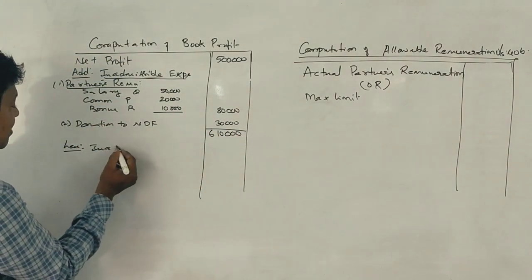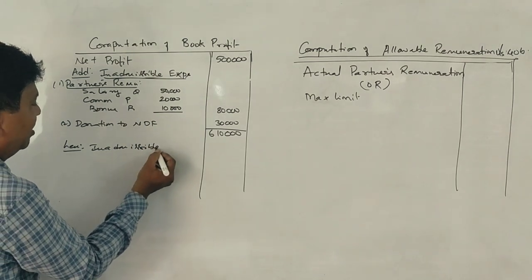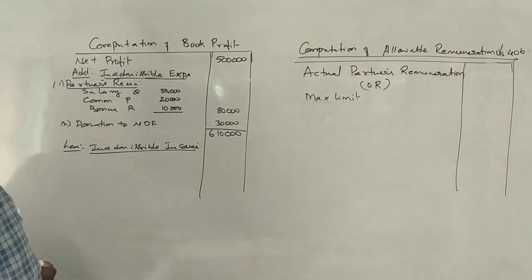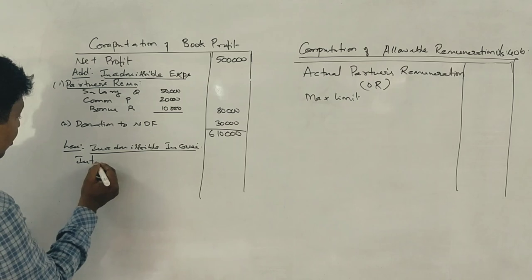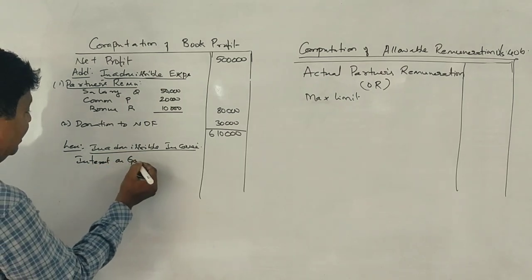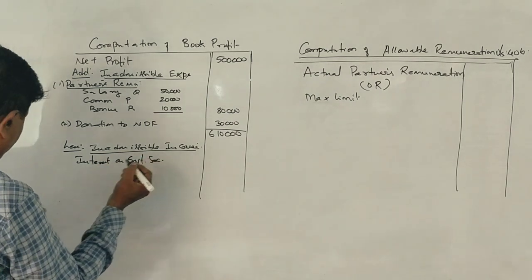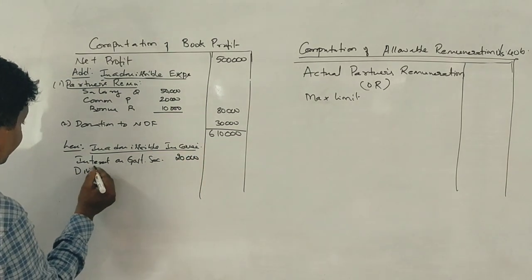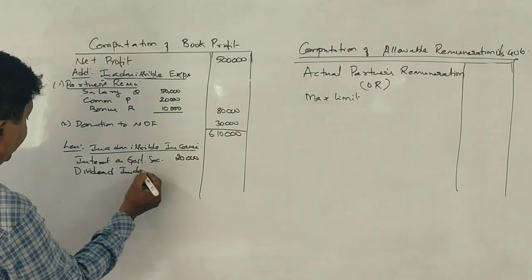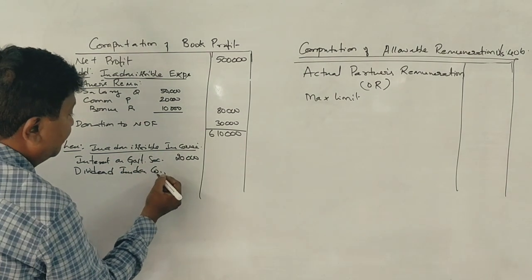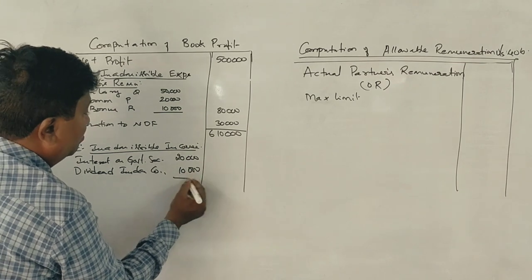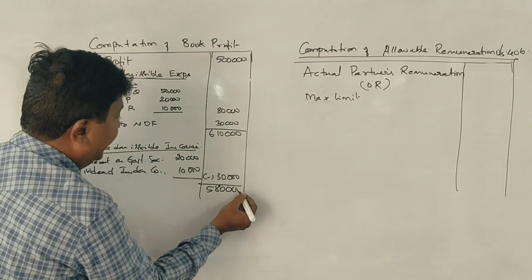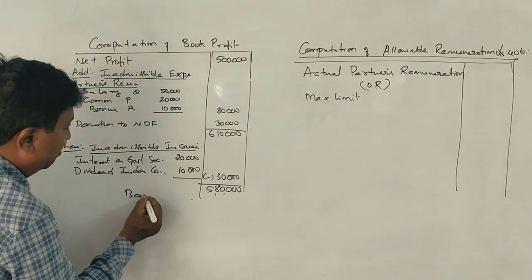Now you have to subtract inadmissible income. If you have inadmissible income, the first one is the interest on government security - that's 20,000 rupees. Dividend from Indian company is 10,000 rupees. If you have 30,000 rupees minus, you will have 5,80,000 rupees as book profit.